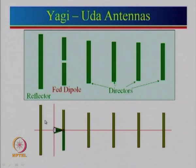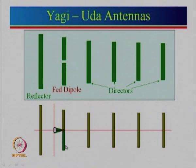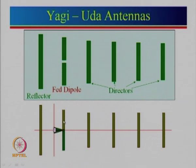We also used a printed version of the Yagi-Uda antenna. Instead of a separate fed dipole with two different feeds, we used a printed dipole antenna: one half of the dipole on one side of the substrate and the other half on the other side, so the total length is approximately lambda by 2. This is lambda by 4 on each side, with a coaxial-to-microstrip transition. The reflector and multiple directors are all printed. When we talk about Yagi-Uda antennas we will see what happens as we add more directors and how the gain increases.